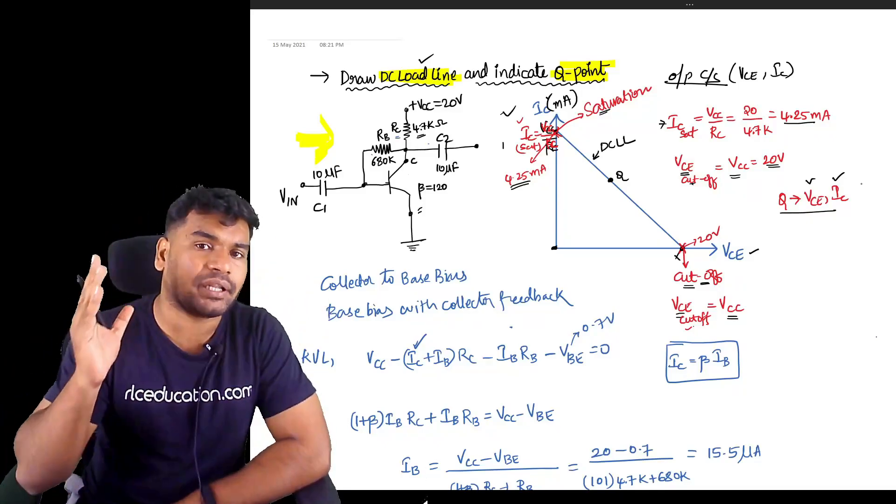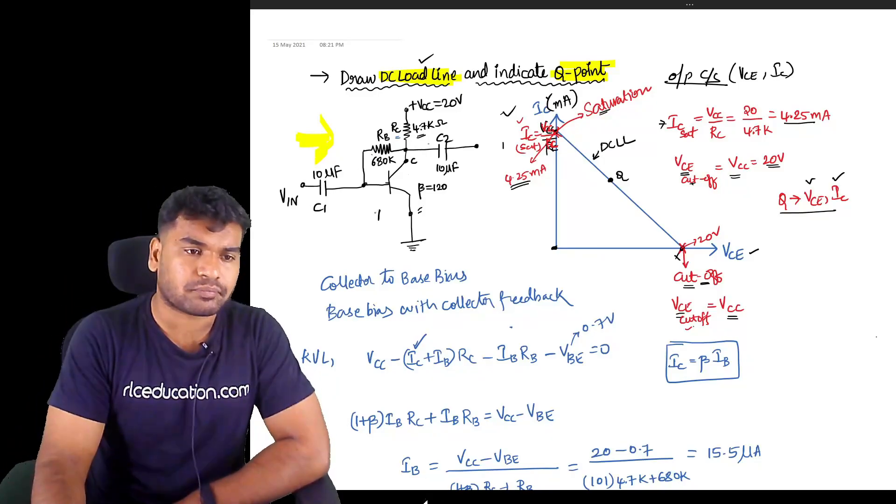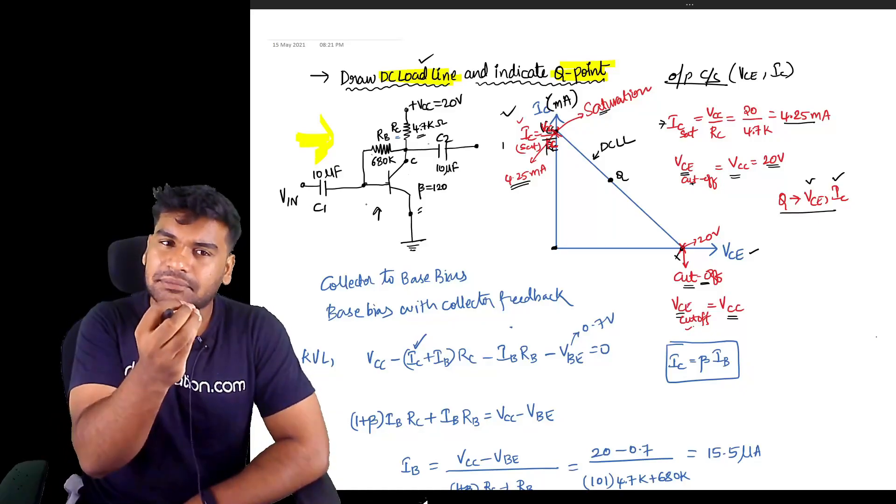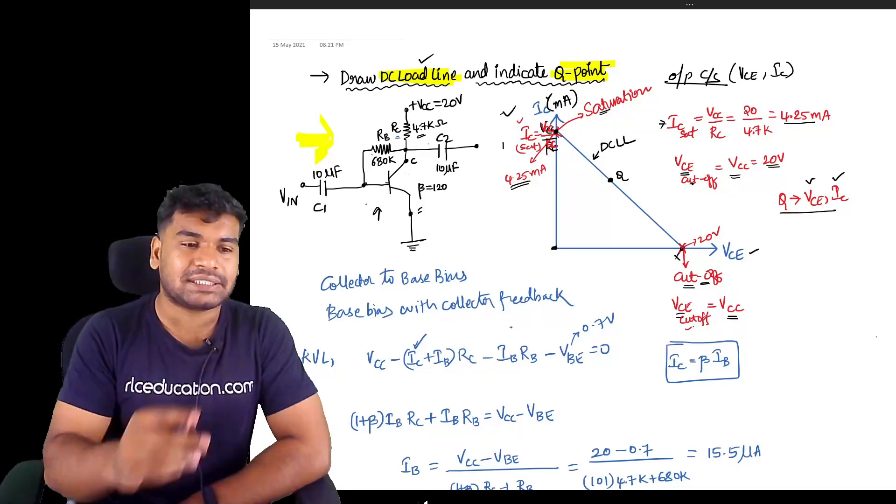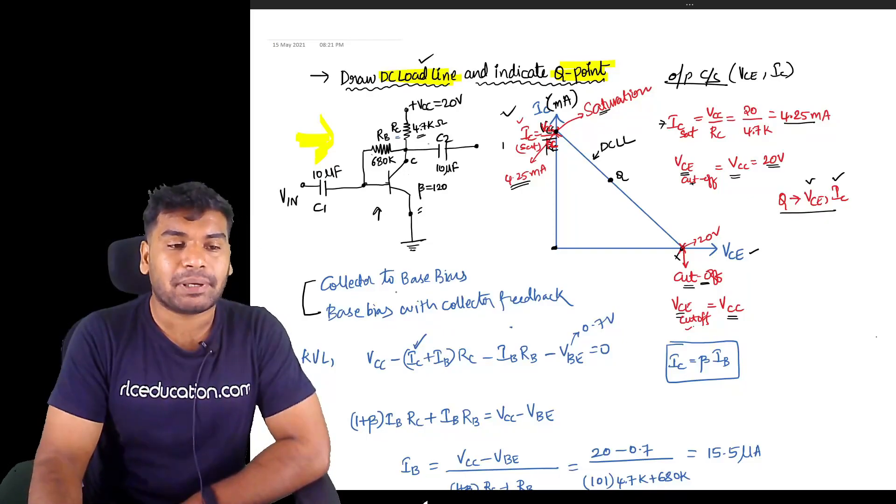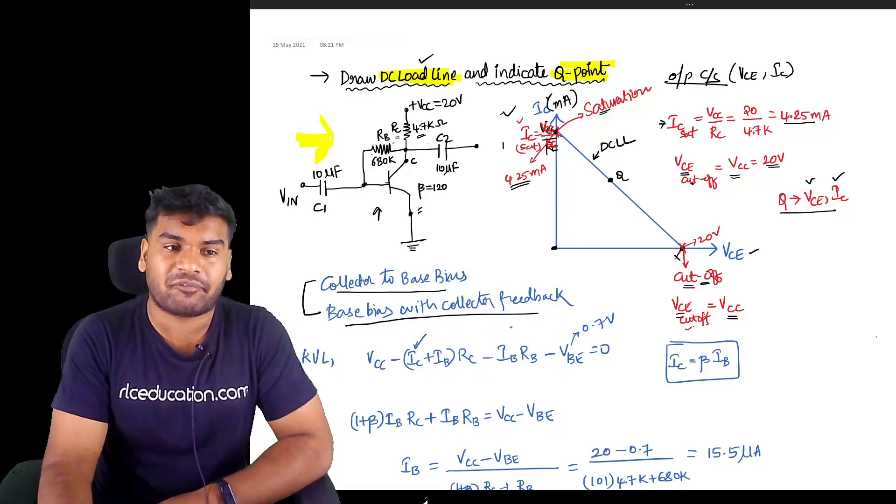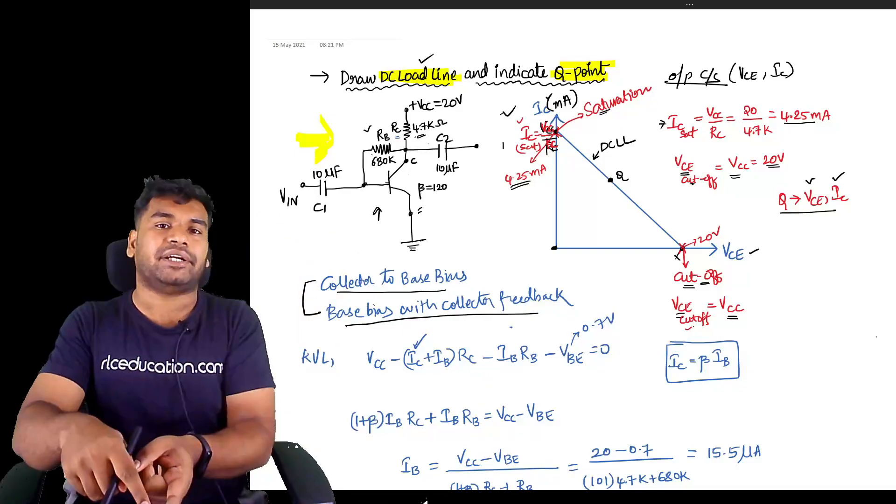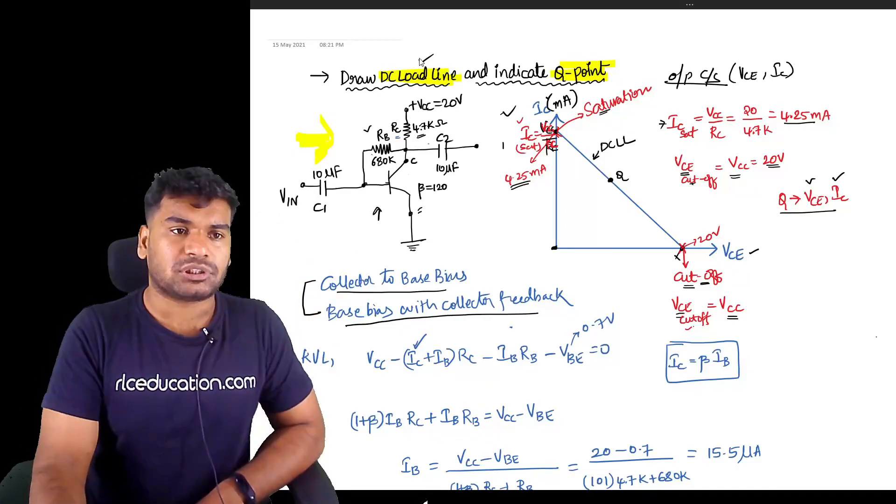This Q-point is defined by a particular VCE and particular IC. That we have to find out based on the operating conditions of that particular circuit. Now look at this particular CE amplifier. There is biasing - can you comment what kind of biasing it is? Yes, it's called collector-to-base bias, or it's also called base bias with collector feedback, meaning RB feedback is coming from the collector side to base.